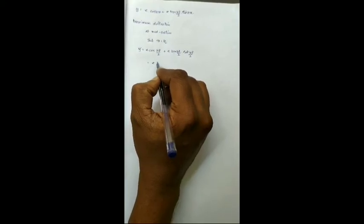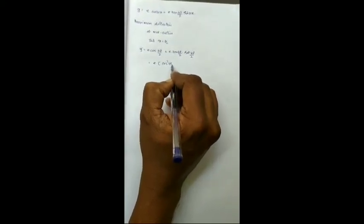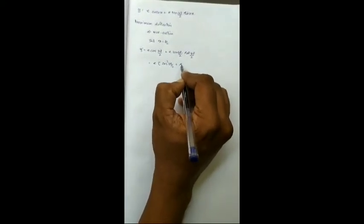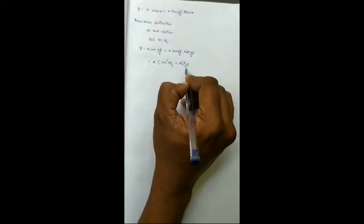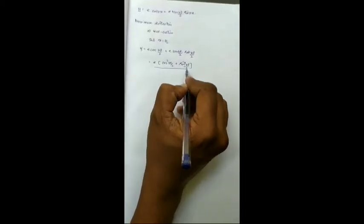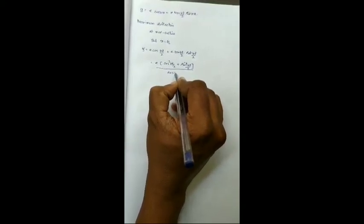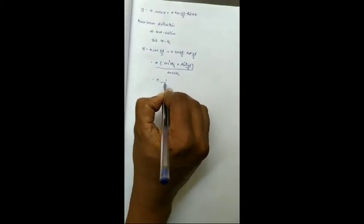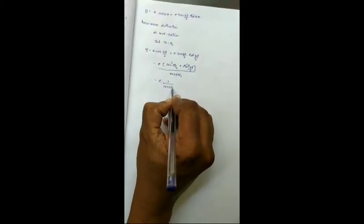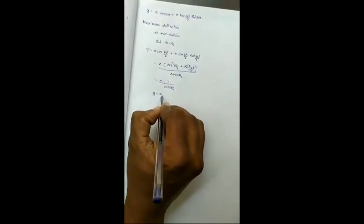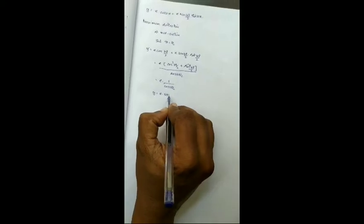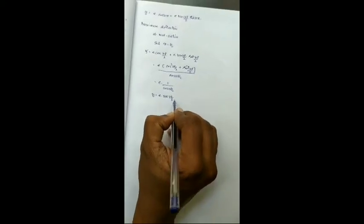You do some modifications, we get e times cos square kL by 2 plus sin square kL by 2 divided by cos of kL by 2. So this ultimately will become e divided by cos kL by 2 and will be written as e secant kL by 2.